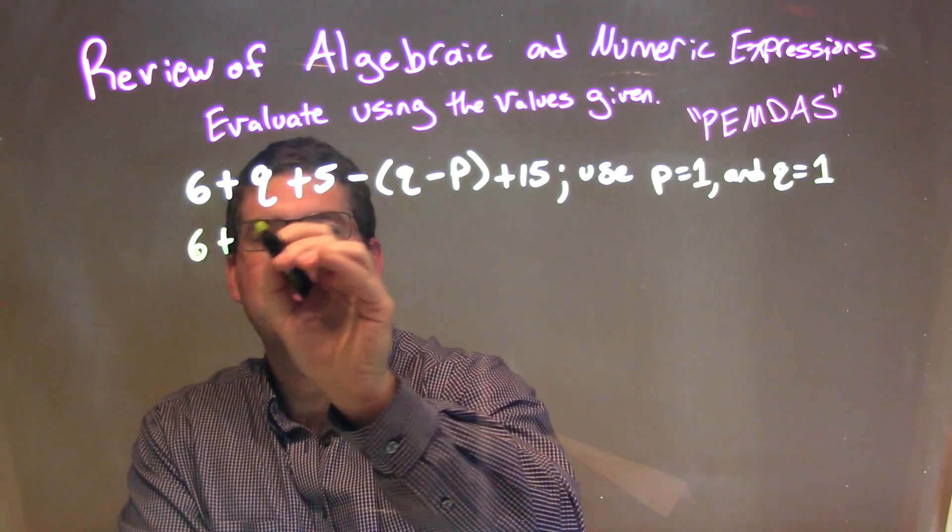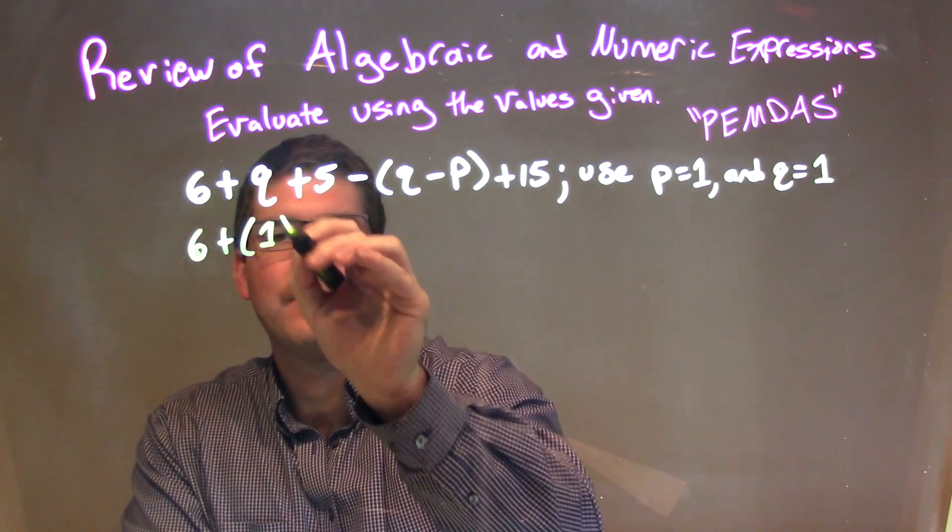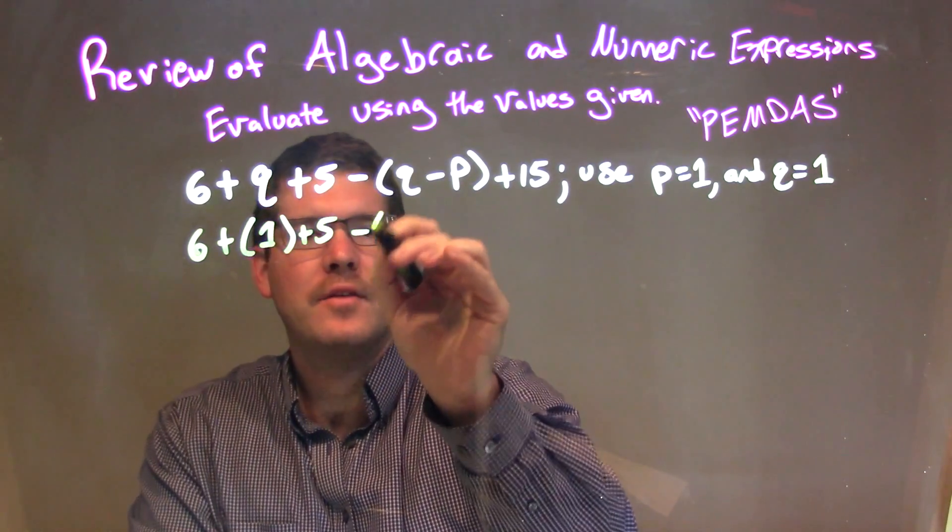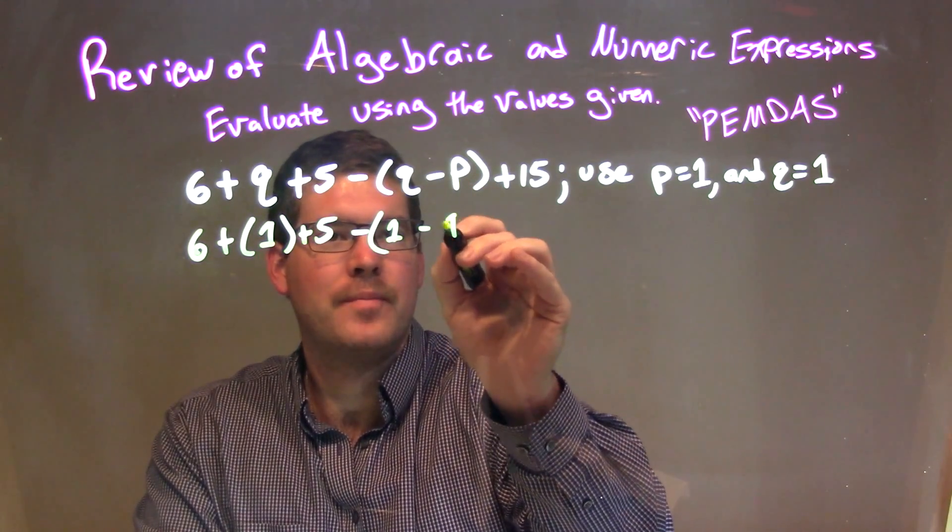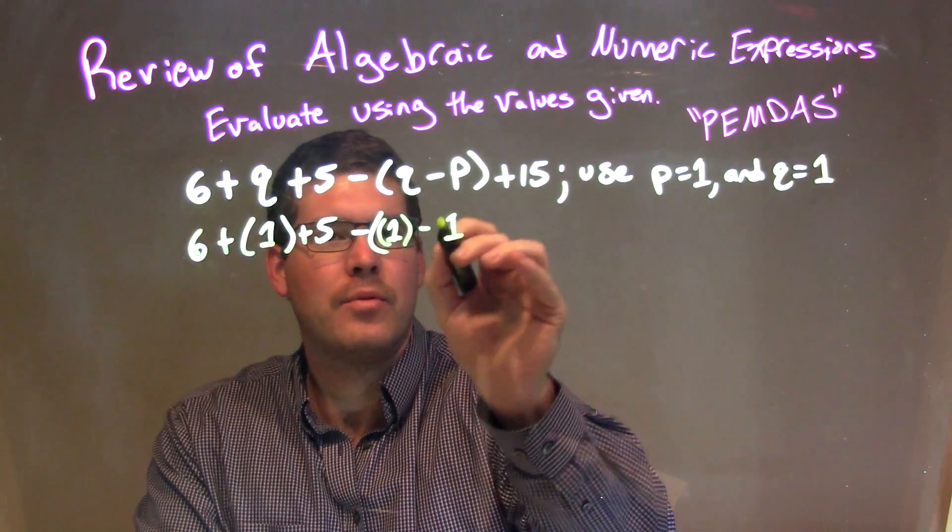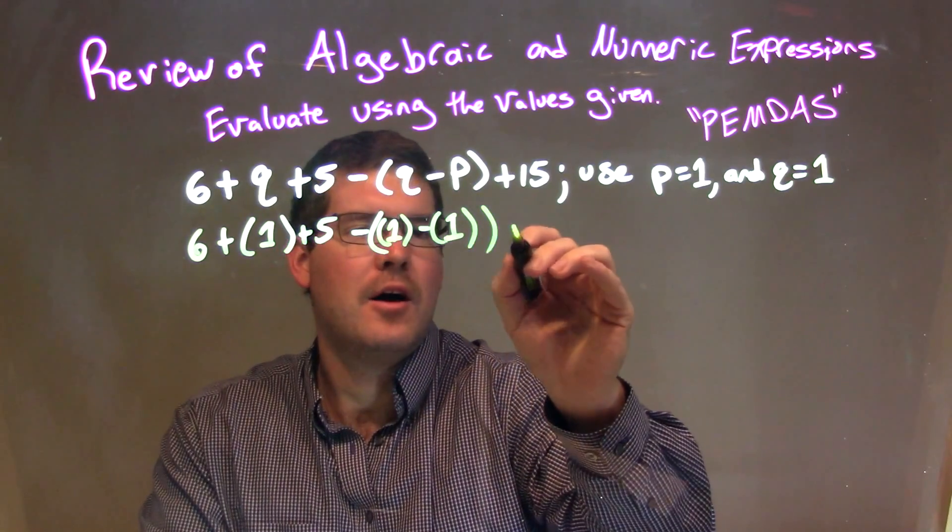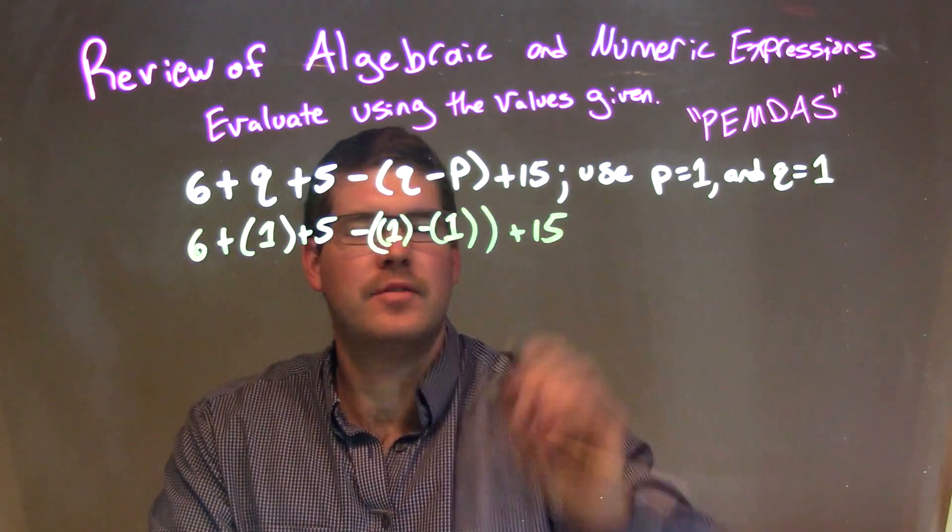6 comes down, plus Q is a 1, plus 5, minus, this Q is just a 1, minus P which is a 1. We can put parentheses and substitute it in, plus 15.